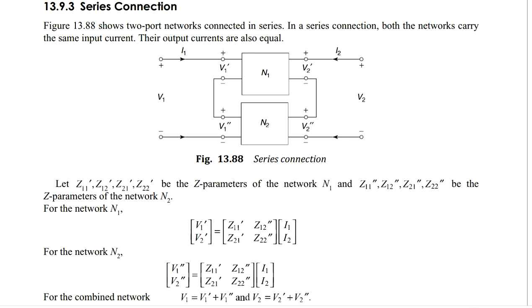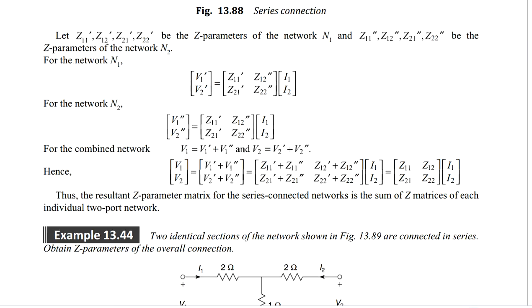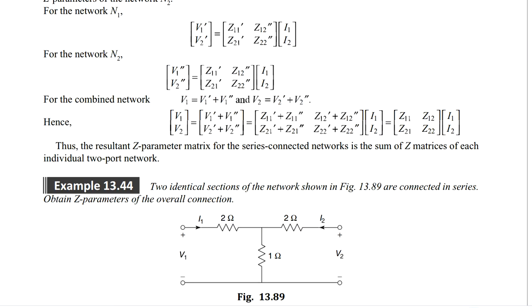we will have V2 is equal to V2 prime plus V2 double prime. This is just with respect to KVL, since the two networks are connected in series. These are the equations that we got from the KVL equation.